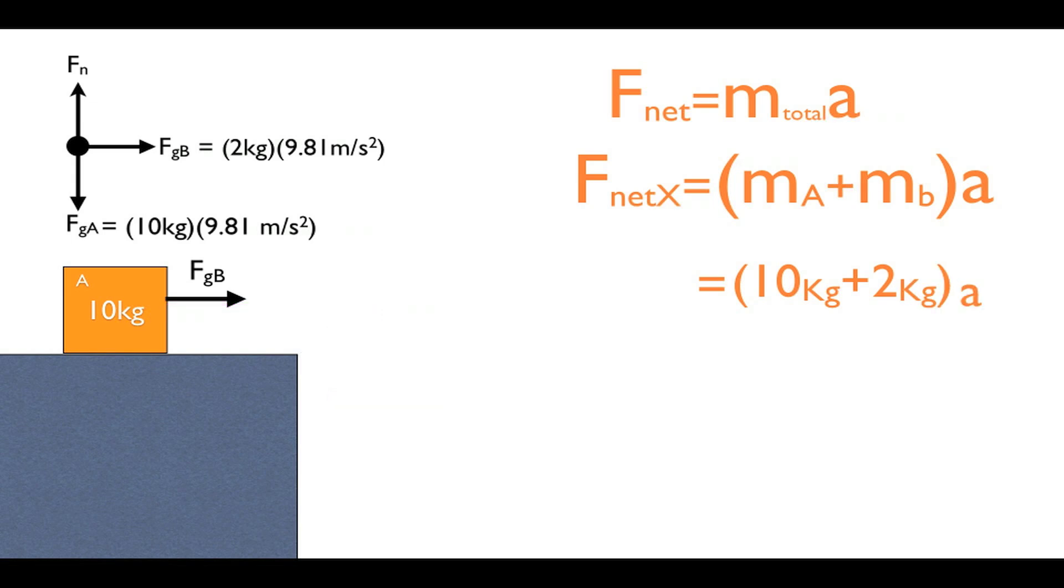The next step is to find the net force. Since we don't have any friction or other forces, the only force we need to include is that 19.6 newtons or the force of gravity from mass B. If this problem had included friction, we would need to include it and subtract it here. Lucky for us, we don't.